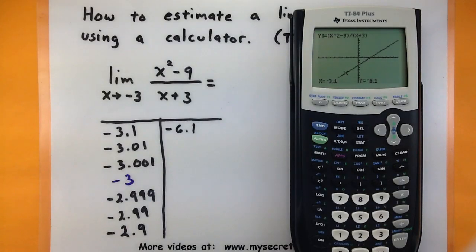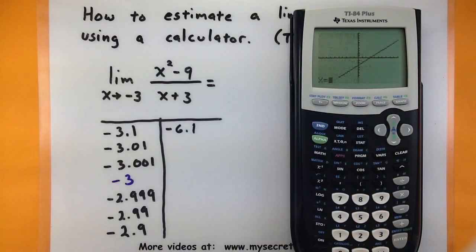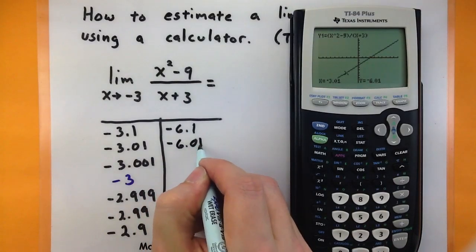To find the rest of our values, we'll basically do the same thing over and over again. So second calc, option 1 is value, negative 3.01, enter, negative 6.01.